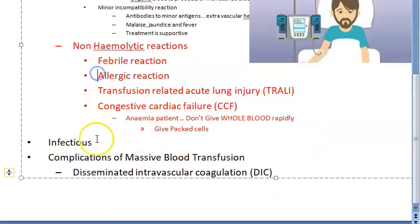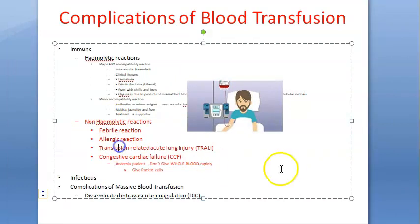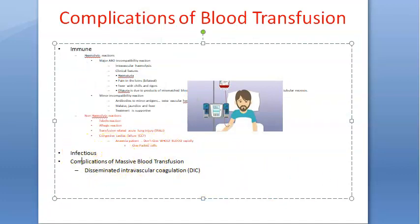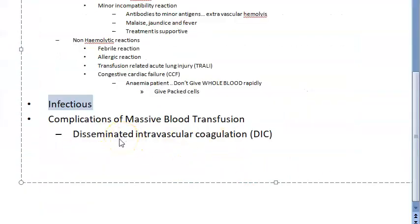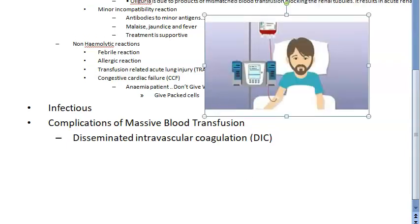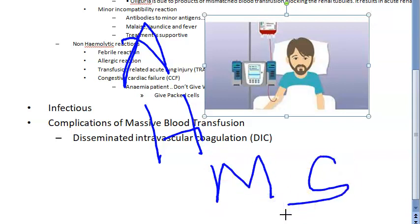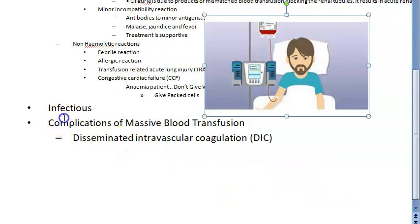We are done with the immune ones. Now let us go to the infectious complications. Because of blood transfusion, a person can get hepatitis, AIDS, malaria, and syphilis. You should screen the blood for these diseases. Prevention is better than cure.